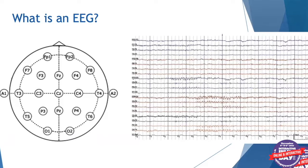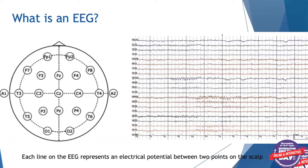This is what the actual recording looks like when it's printed out on the EEG that we interpret. Each line represents an electrical potential between two of those points on the scalp — the electrodes. For example, the potential difference between FP1 and F7 corresponds to the top line on the printout, in the left frontal region. Similarly, FP2 and F8 in the right frontal region corresponds to another line on the page. All these lines correspond to differences between two points on the scalp.